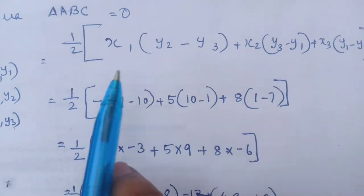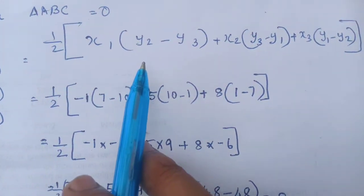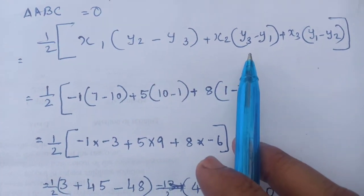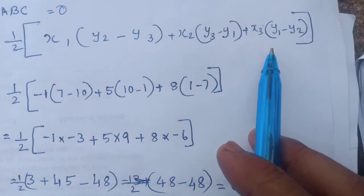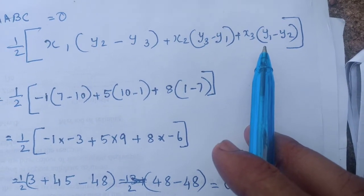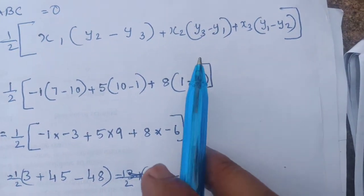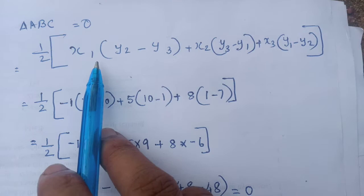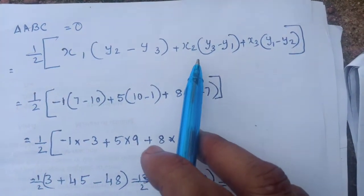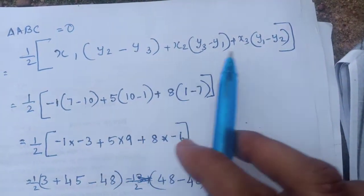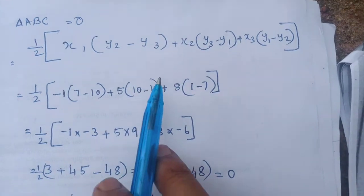This equation is half into x1(y2 - y3) plus x2 into (y3 - y1) plus x3 into (y1 - y2). So x1, then 1, 2, 3 like that, 2, 3, 1 like that we have to study this equation.